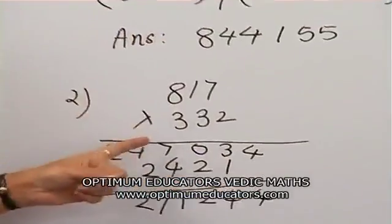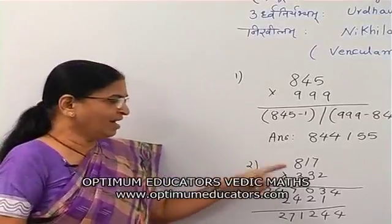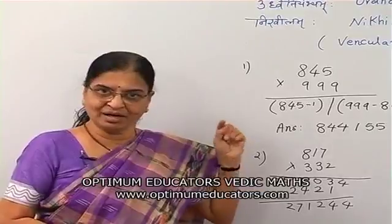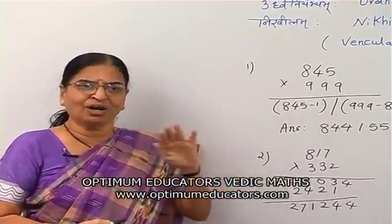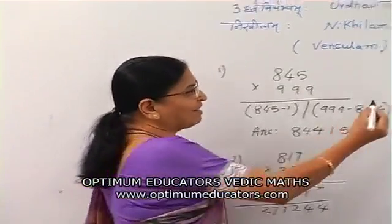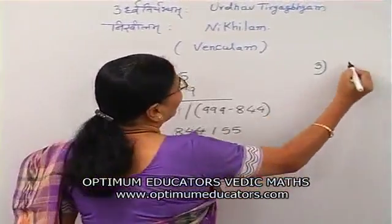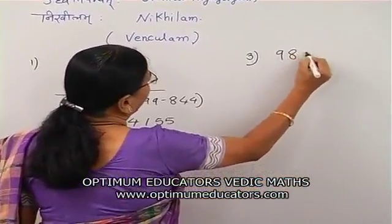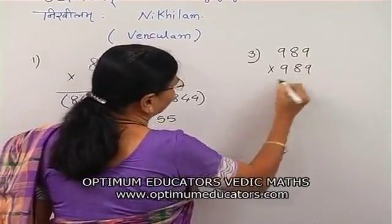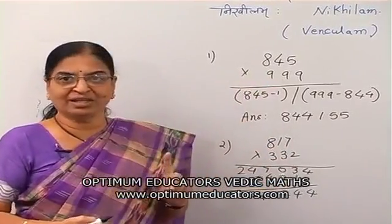For this sum, if you try to use the Eka-Niunena method, it becomes more complicated. Urdhva-Tiryabhyam is very easy when the digits are small — lower than 5. Now let's take one more example where the digits are very big: 989 multiplied by 989. Here also there is no 999, so you cannot use the magic of 9.